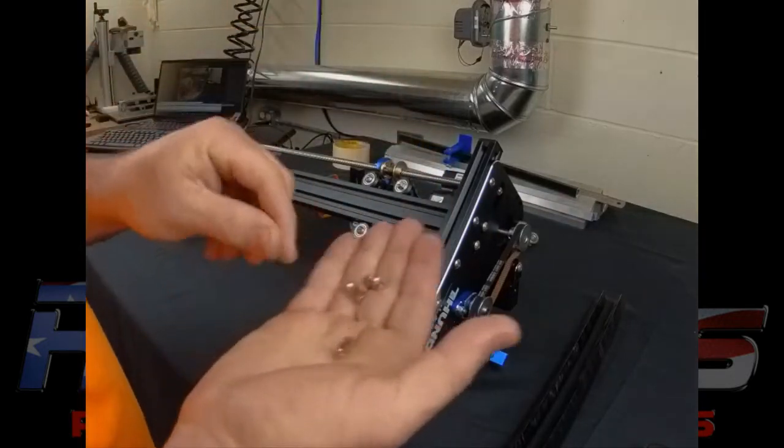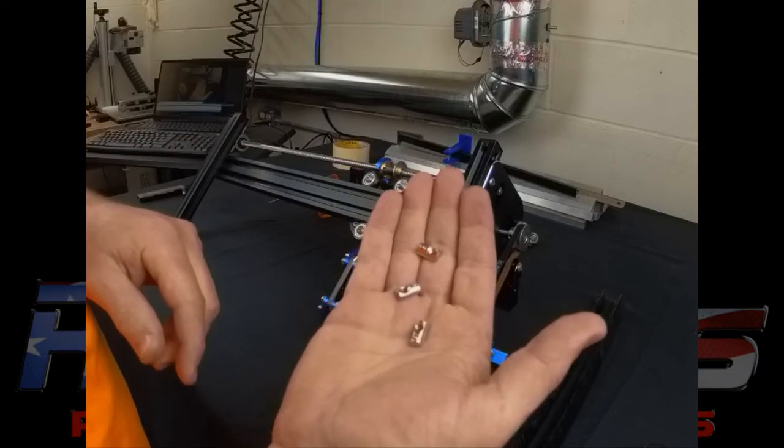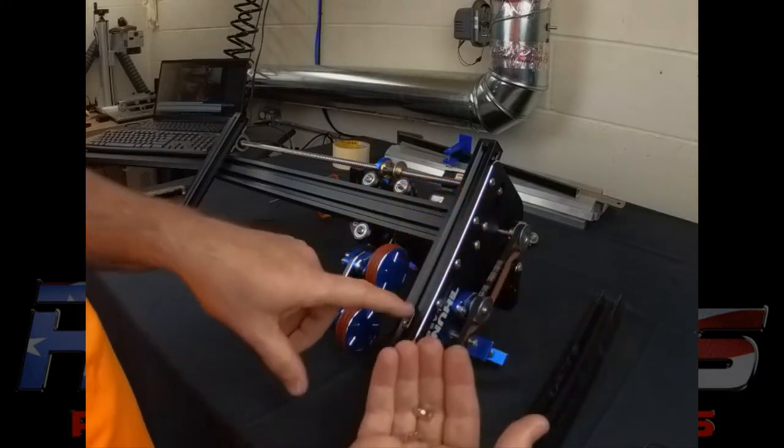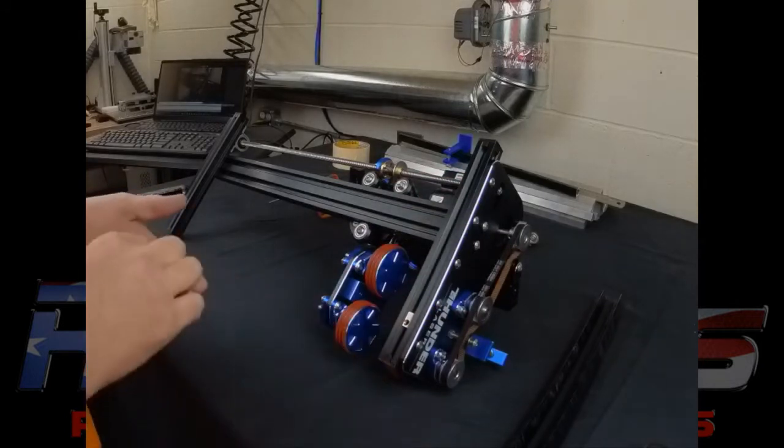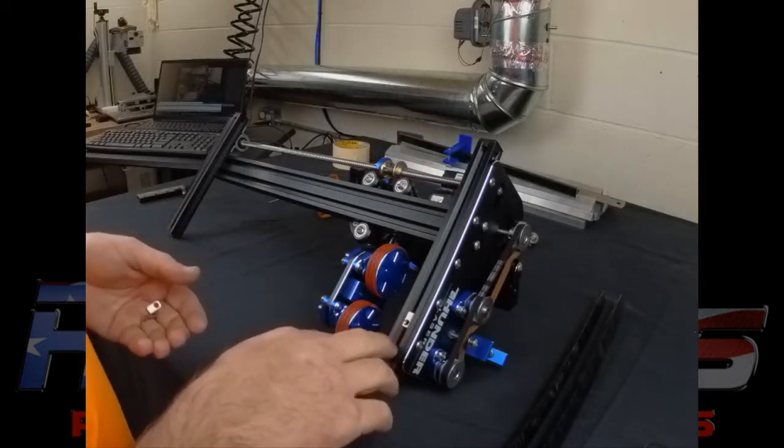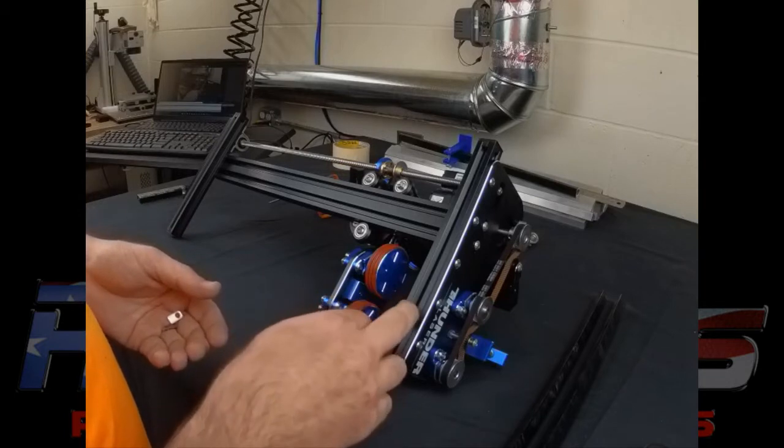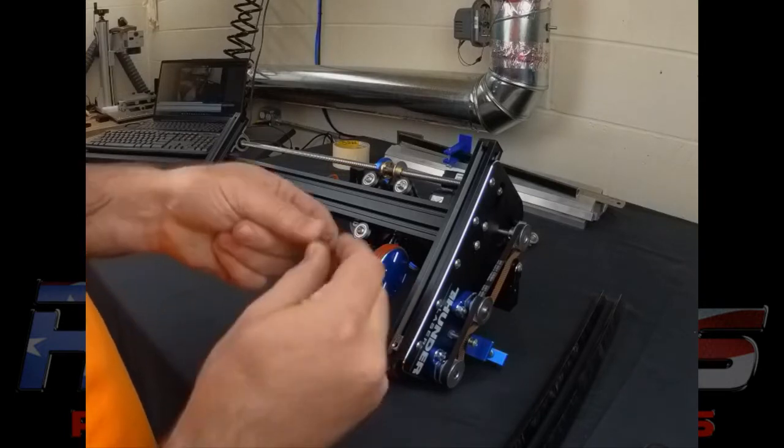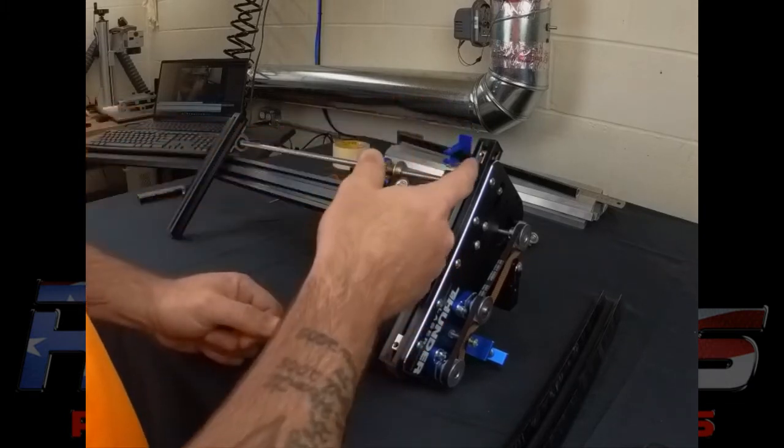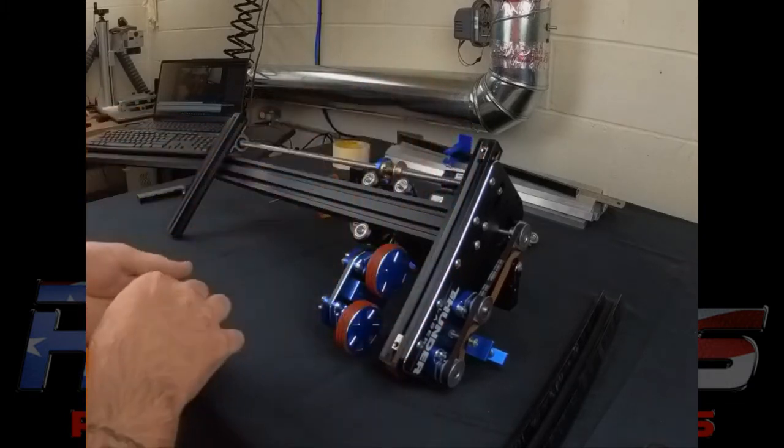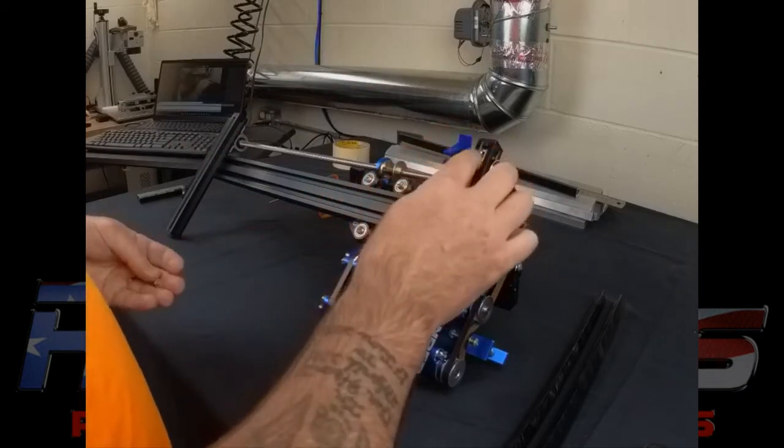Next in your kit you're gonna have four captive t-nuts. Those are going to slide into your track here. As you can see we've got one of them already in there. You want the hole facing towards the outside of the rotary. To put these in, drop them in the track and just slightly rotate them and they'll fall right into the spot and they won't come out.